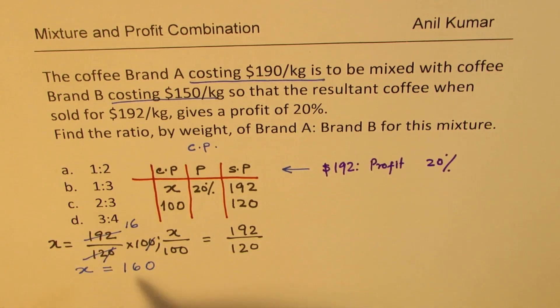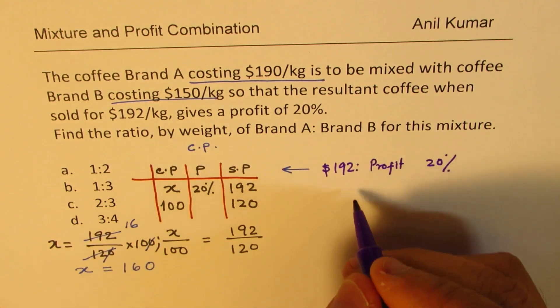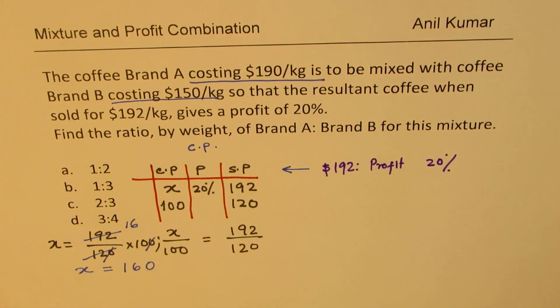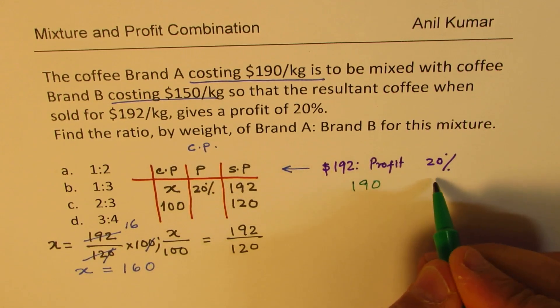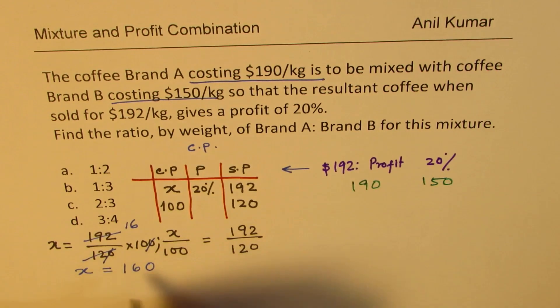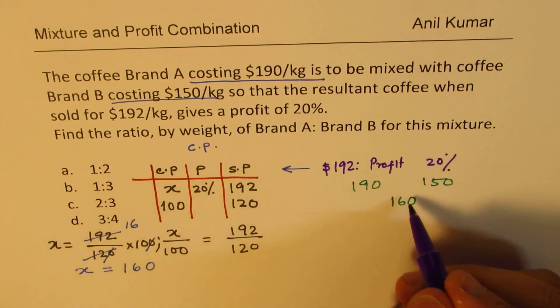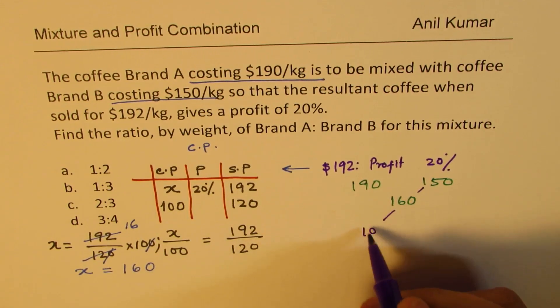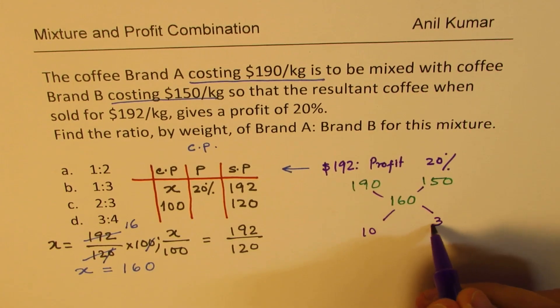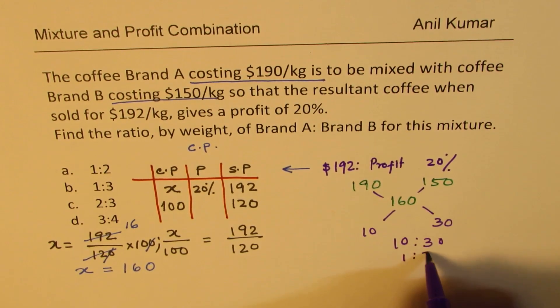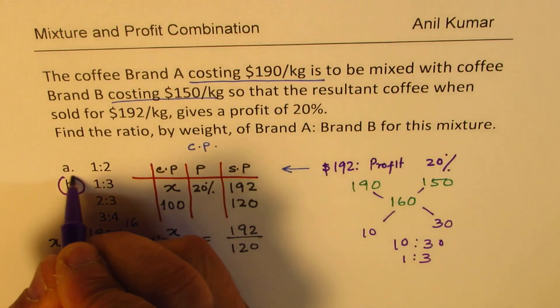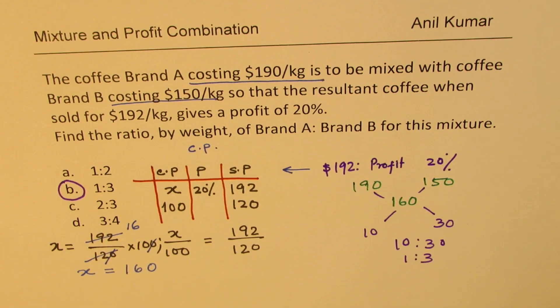Now we have cost price of all the three. That is to say, we have a mixture here in which expensive quantity is $190, the cheaper one is $150, and the average which we got is $160. So if I take the difference, I get $10 here. The difference there is $30. So the ratio is 10 is to 30, which is 1 is to 3. So the answer is B, which is 1 is to 3.